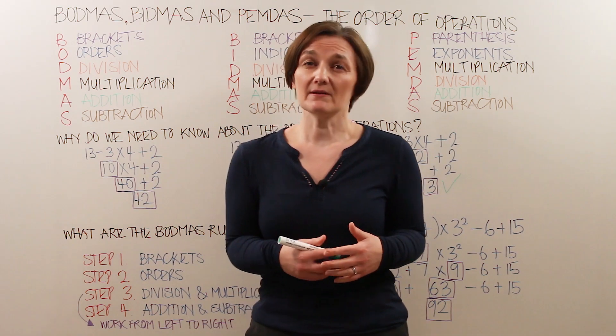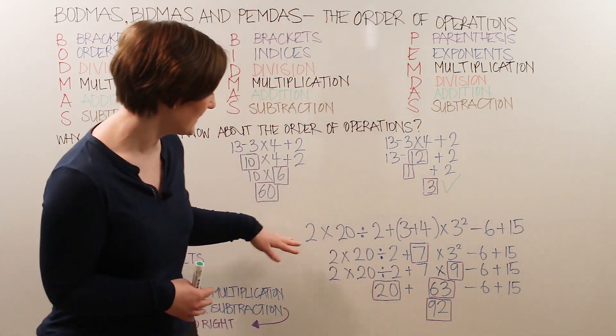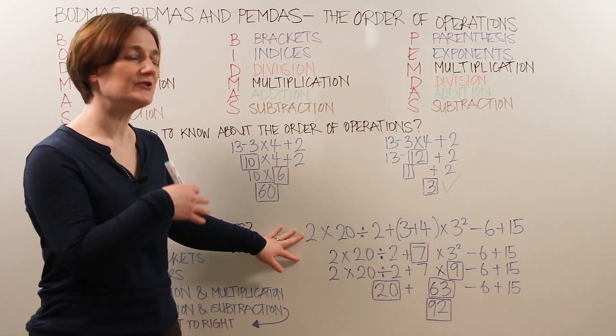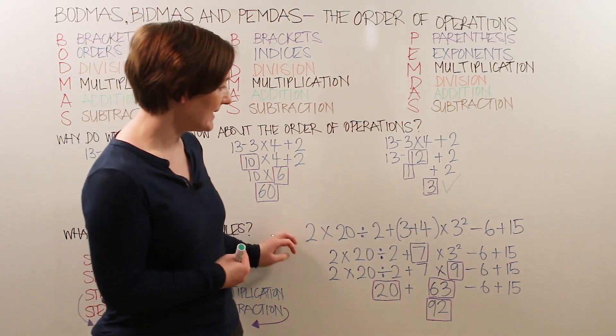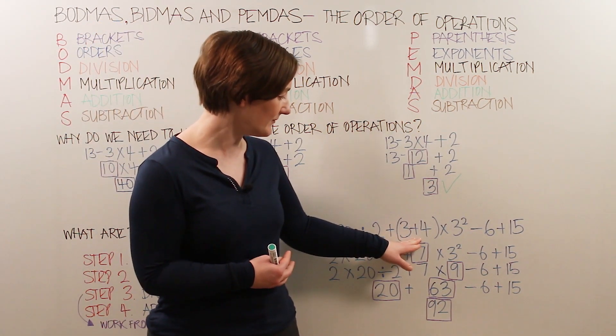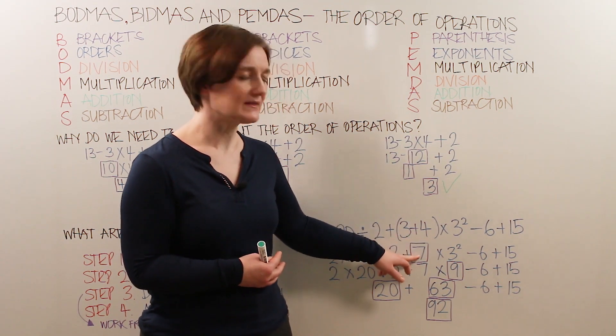So now let's try solving a slightly more complicated problem, which we have here. We just need to work through applying the BODMAS rules. So step 1, B is for brackets. We have the 3, add the 4, which gives us a single number of 7.